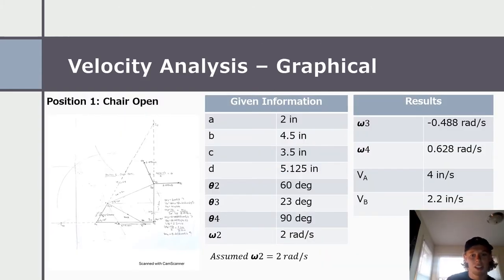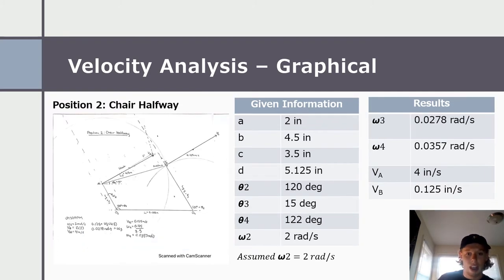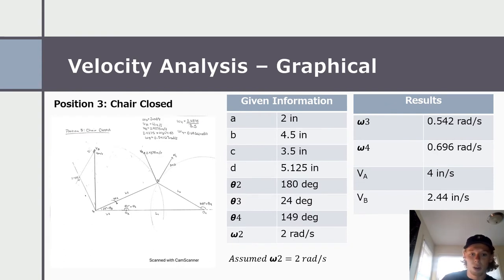Moving on to the velocity analysis, graphical. At chair open, theta two equals 60 degrees, W three equals negative 0.488 radians per second and W four equals 0.628 radians per second. At chair halfway, theta two equals 120 degrees, W three equals 0.0278 and W four equals 0.0357. At chair closed, theta two equals 180 degrees, W three equals 0.542 radians per second and W four equals 0.696 radians per second.